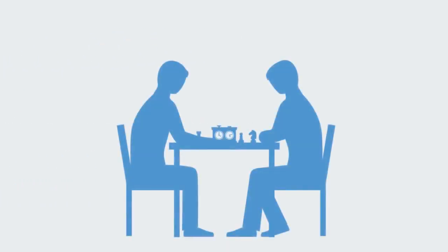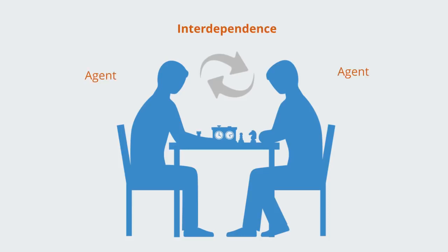So in this video we've given an outline to what game theory is, talking about it as the study of situations of interdependence between adaptive agents, and how these interdependencies create the core dynamic of cooperation and competition that is of central interest to many. In the coming videos in this section, we'll talk about the different elements involved in games and the different types of games we might encounter.